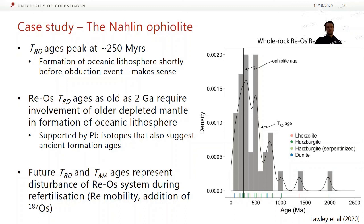Converting these into TRD ages, you can see there's a big peak about 250 million years ago — which makes sense, as our oceanic lithosphere probably formed shortly before it was obducted onto the continents. But the TRD ages as old as 2 billion years need some involvement of older depleted mantle in the formation of this oceanic lithosphere. This is also supported by some lead isotope work that gives similar ancient depletion ages. The future TRD and TMA ages represent disturbance of the rhenium-osmium system during refertilization — so this is rhenium mobility or possibly addition of 187-osmium.